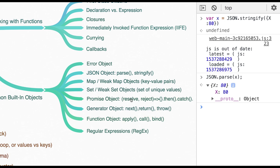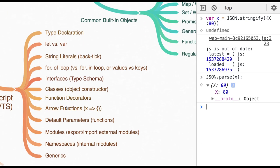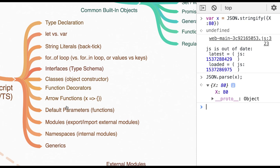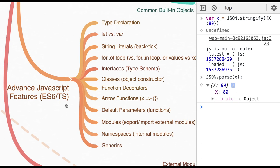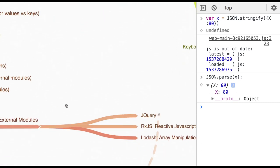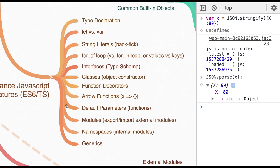We will also be talking about WeakMap and WeakSet. Promises are advanced topics covering how to manage callbacks and write asynchronous code in JavaScript. We touched on generators briefly. Functions — call, apply, and bind — were discussed to override the 'this' context. Regular expressions are also on the list. New ES6 features I'll cover in the advanced section include: let and const, template literals, for-of loop, interfaces, classes, modules with import and export, default parameters, arrow functions, namespaces, generators, and iterators. External modules will not be covered. That's it — see you in the next video!